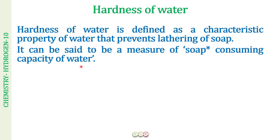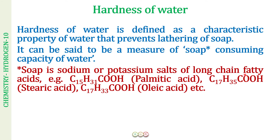One thing that should be very clear to you is what is the chemistry of a soap, because then only we will be able to understand why the soap is not producing lather with hard water. Soap is the sodium or the potassium salt of long chain fatty acids. For example, C15H31COOH is palmitic acid, C17H35COOH is stearic acid, C17H33COOH is oleic acid. The sodium or potassium salt of these is called soap — for example, sodium palmitate.